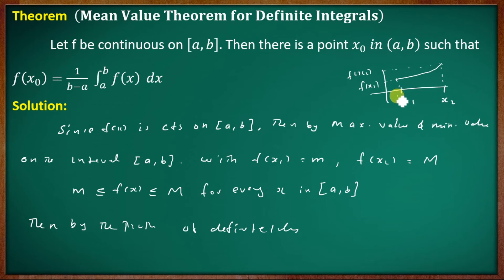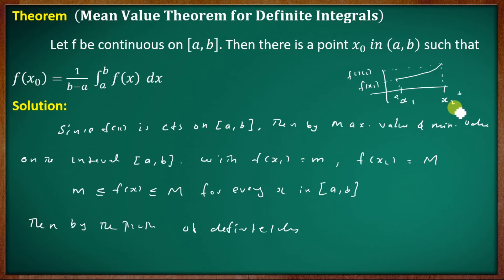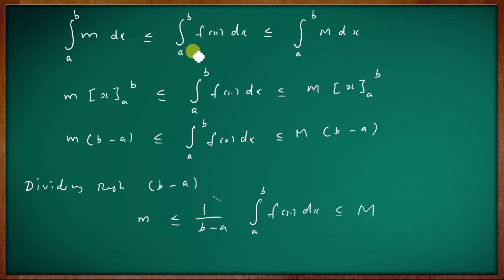If you have a point x₁ as the minimum point and x₂ as the maximum point, with corresponding function values f(x₁) = m as the minimum value and f(x₂) = M as the maximum value, then m ≤ f(x) ≤ M. Integrating: m(b−a) ≤ ∫ₐᵇ f(x) dx ≤ M(b−a). Dividing throughout by (b−a): m ≤ (1/(b−a)) ∫ₐᵇ f(x) dx ≤ M.